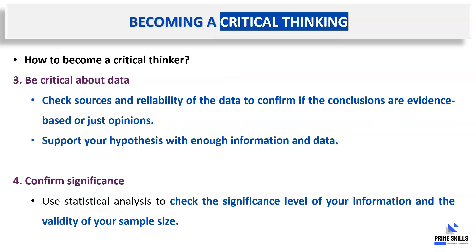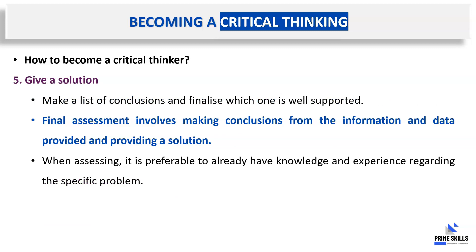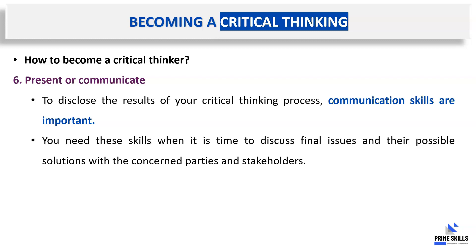Step three: be critical about the data — do not rely on it directly. Try to have multiple sources and analyze the data properly. Step four: confirm significance — use statistical analysis to check the significance level of your information. Step five: give a solution. If you are not providing a solution, your critical thinking doesn't hold value. Step six: present or communicate — be articulate enough to present your solution. Argumentation skills, storytelling, and data storytelling are very important here. Understanding ethos, pathos, and logos is essential for effective communication.